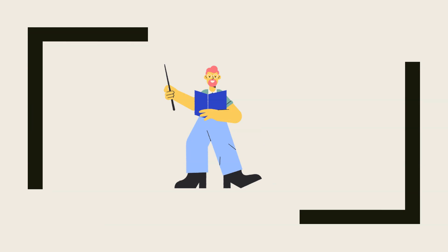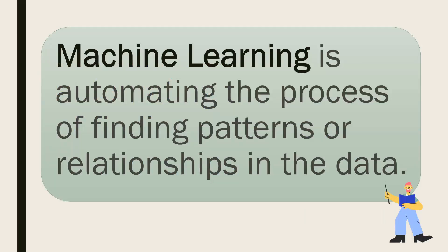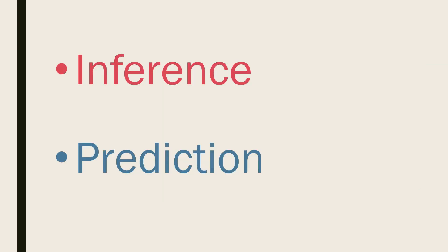Continuing our discussion on machine learning, let us move further. Machine learning, as we have studied till now, is automating the process of finding patterns or relationships in the data. Machine learning can be used for inference or prediction.